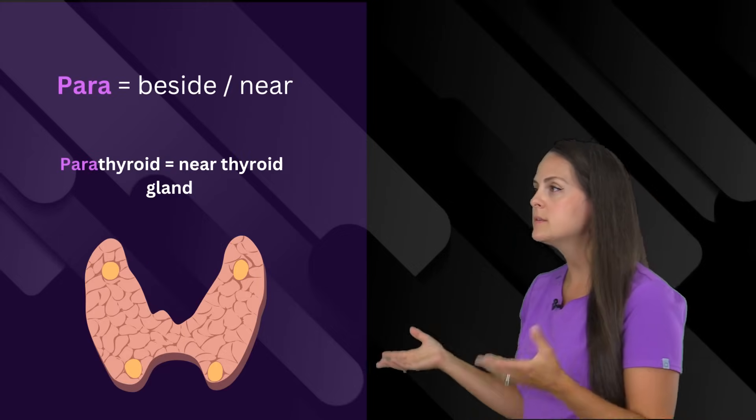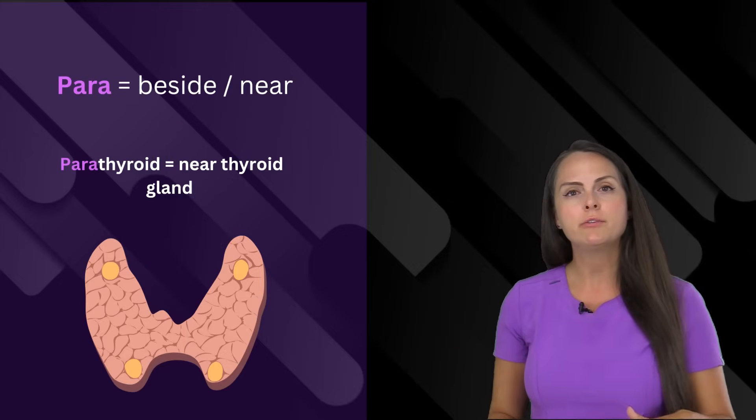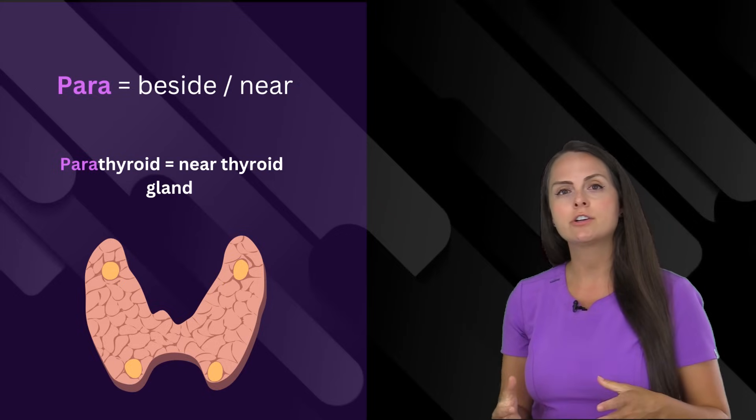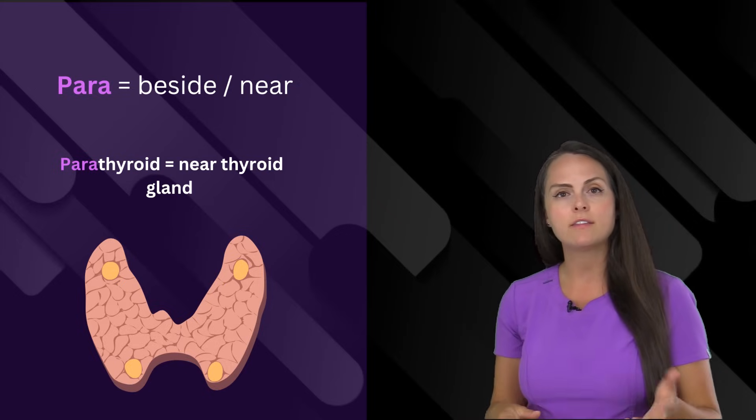Next is para, which means beside or near. Whenever you hear someone talking about the parathyroid, they're talking about a structure that is near or beside the thyroid gland.